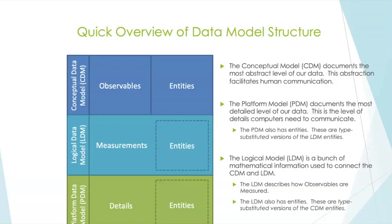Going all the way to the bottom, we have the platform data model. This is the most detailed level of our data. This really gets down to the level of where computers start to communicate, where we have flows and integers and strings and those kinds of things that computers share.